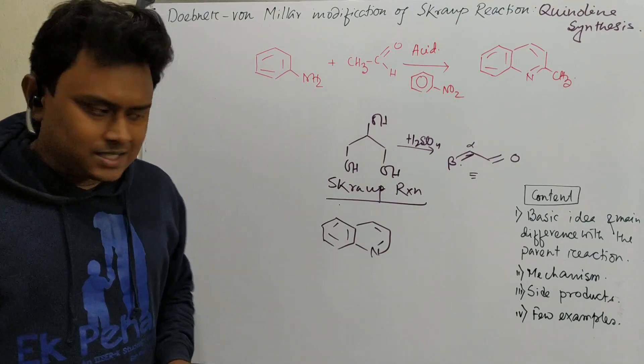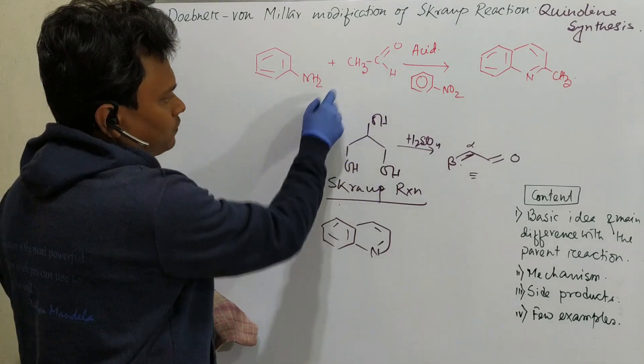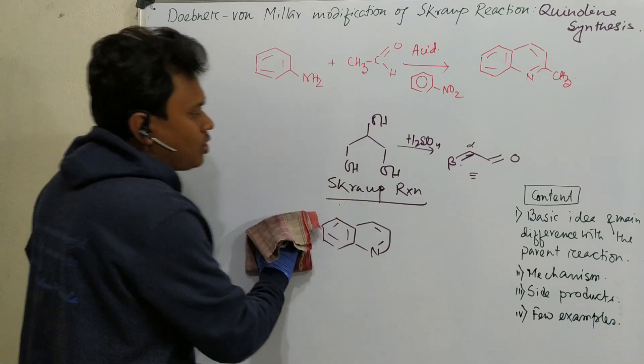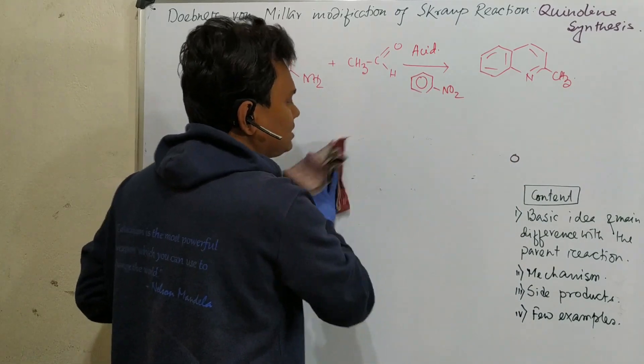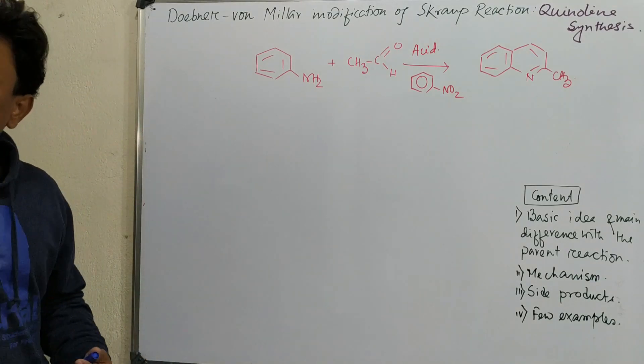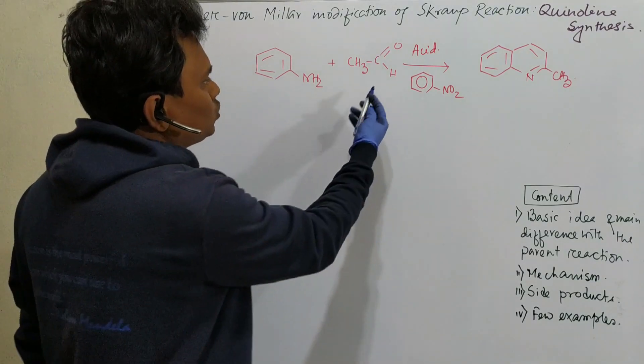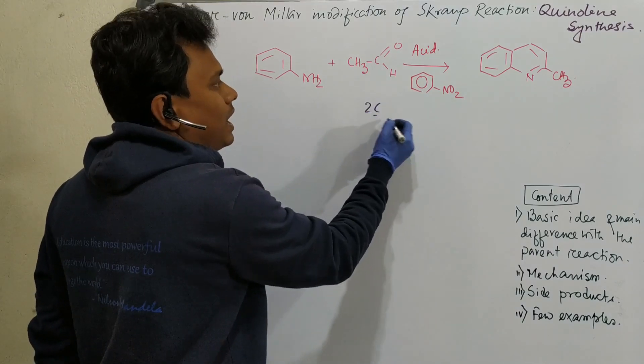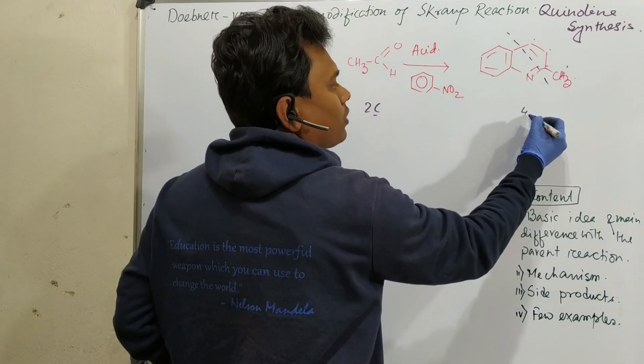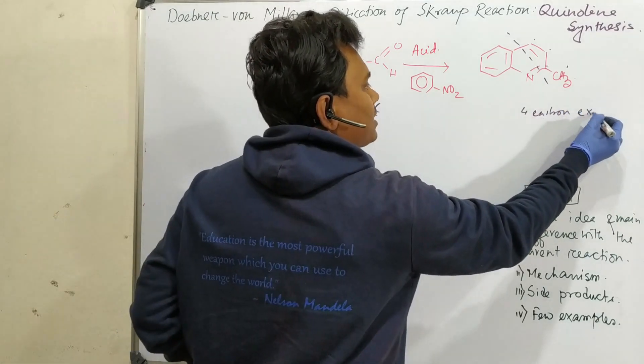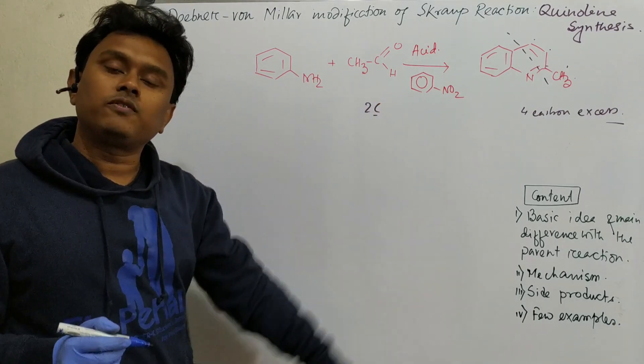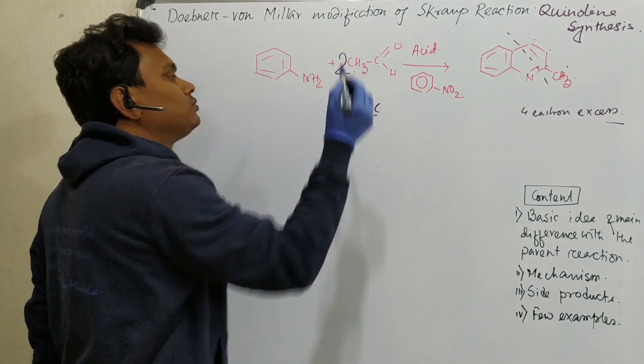So what is the basic difference? The basic difference instead of an alpha beta unsaturated carbonyl they have taken carbonyl aldehyde and that is the basic difference. So we will discuss how this is ultimately converted into this. So a simple trick or common sense. See this is a two carbon aldehyde. And here how many carbon have excess? One, two, three, four. So four carbon excess. So what does this mean? It means that somehow two molecules of aldehyde is used.